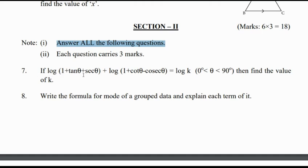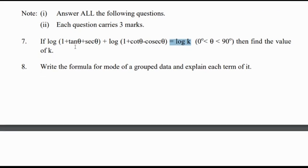Question 7: If log(1 + tan θ + sec θ) + log(1 + cot θ − cosec θ) = log k, find the value of k. This is a connection question between logarithms, real numbers, and the trigonometry chapter.